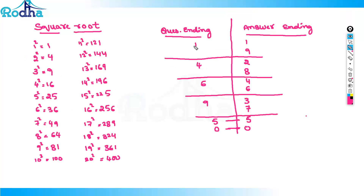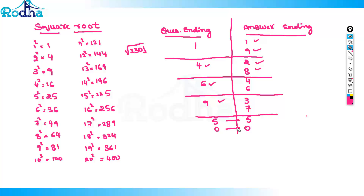You have to remember — it is very simple. If in the question the square root is ending with 1, either you will get 1 or 9 in the last unit digit of the answer. If it is ending with 4, the unit digit will come as either 2 or 8. Similarly for 6, and 9 as well. For 5, it will be 5 only. For 0, it will be 0 only.